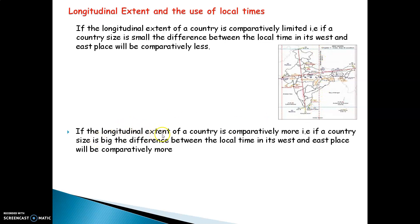If the longitudinal extent of a country is comparatively more — that is, if a country's size is big — the difference between the local time in its west and east places will be comparatively more. In summary: less size of a country means less difference; bigger size means more difference.